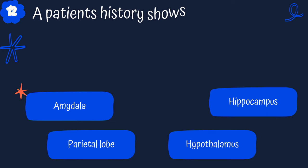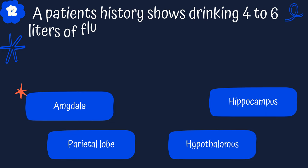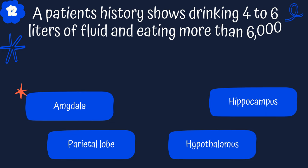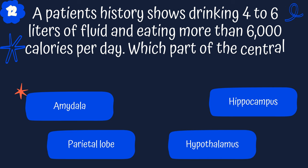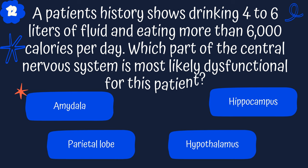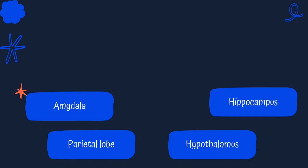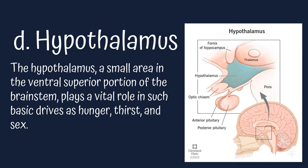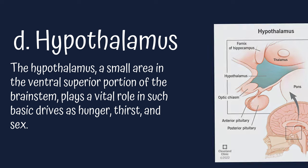Last question. A patient's history shows drinking 4 to 6 liters of fluid and eating more than 6,000 calories per day. What part of the central nervous system is most affected in this patient? Is it the amygdala, the parietal lobe, hypothalamus, or hippocampus? The answer is D, hippocampus — that small area in the ventral superior portion of the brainstem — and it plays a vital role in things such as hunger, thirst, and sex drive.